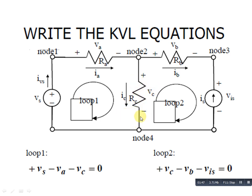This is the whole procedure for assigning plus-minus signs. Now write down the KVL equation for loop 1. Starting from node 1 — a plus sign can be taken as minus, and a minus sign as plus. Alternatively, you can take plus as plus and minus as minus — it depends on your choice. But whichever convention you choose, it must be followed consistently for the whole circuit.